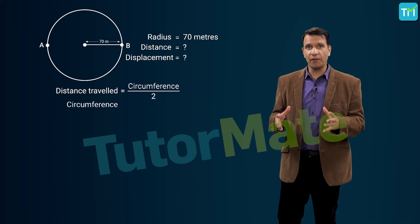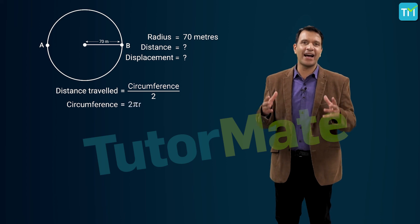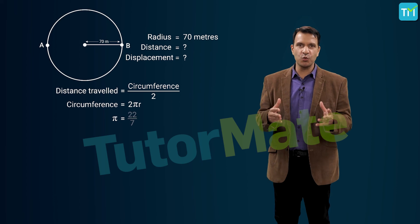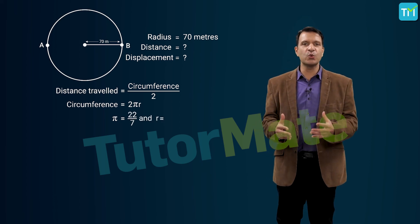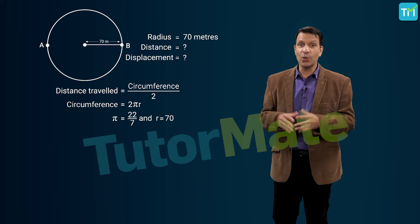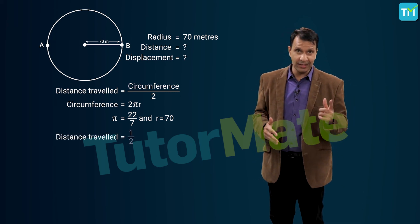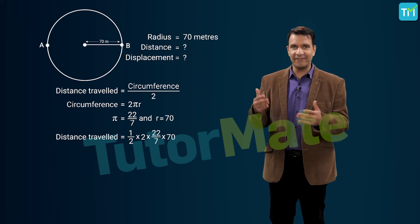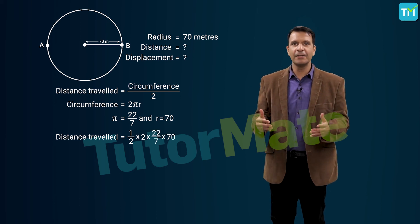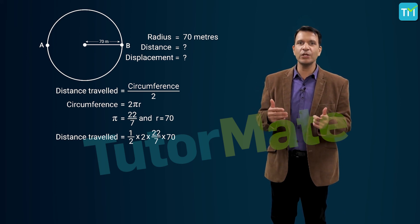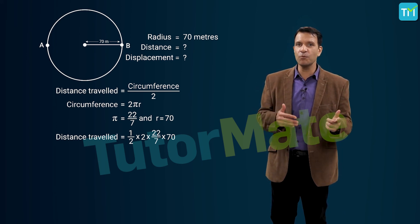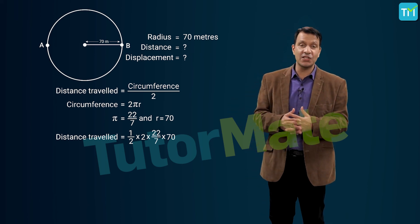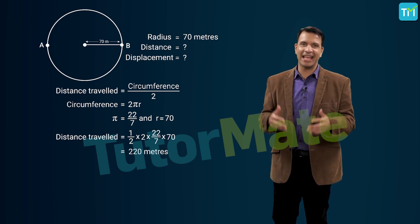The circumference of the circular path is given as 2 pi r, where we know the value of pi as 22 by 7 and r is equal to 70 meters. So we can calculate the distance traveled as 1 by 2 into 2 into pi into r. Substituting the values of pi and r, we get the distance as 1 by 2 into 2 into 22 by 7 into 70 meters. Calculating this, we get the distance as 220 meters.